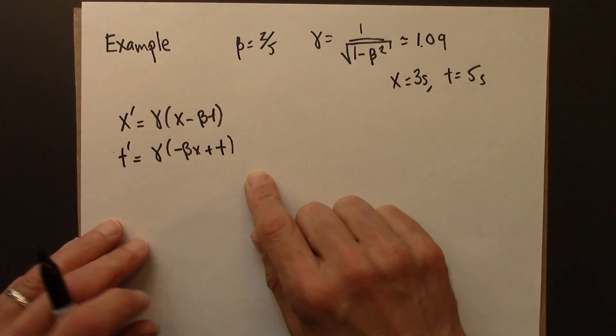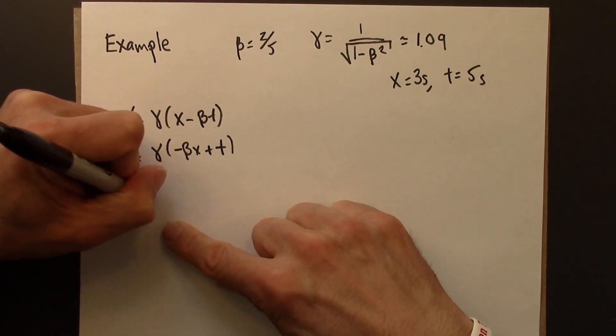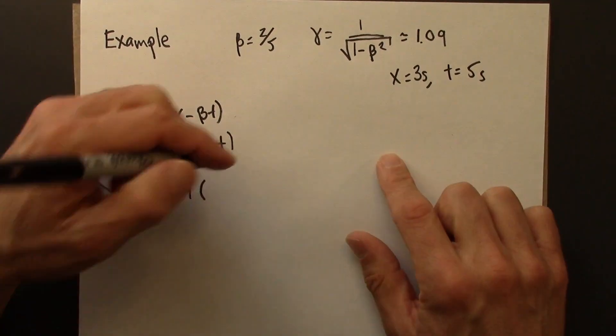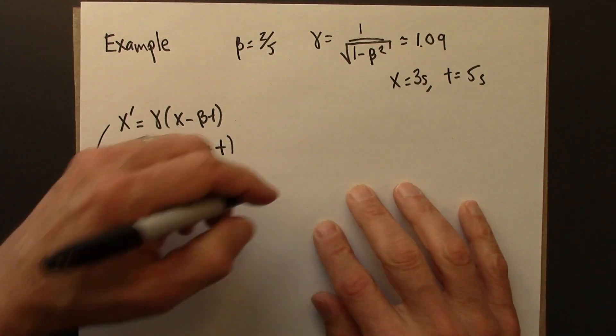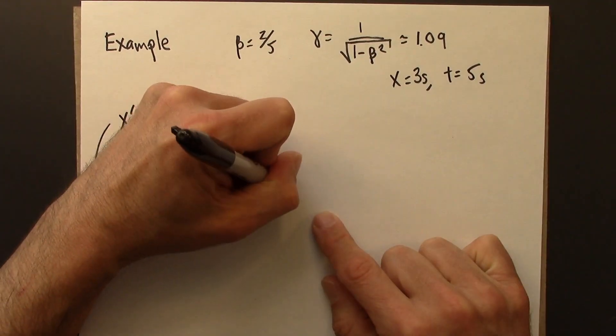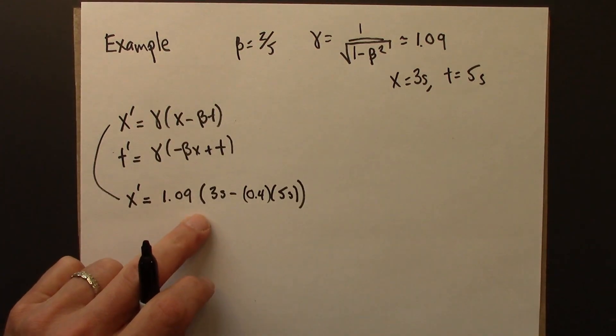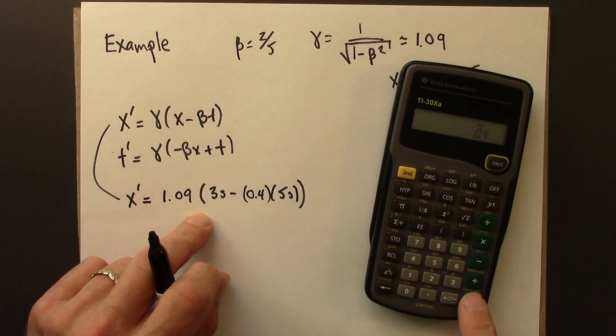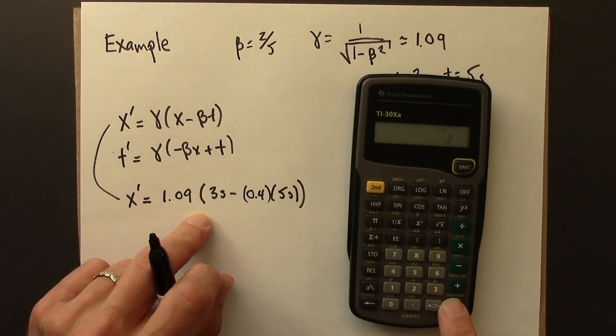And now let's plug in and see what we get. I guess I'll do x prime first. x prime is gamma, that's 1.09, x is 3, beta is two-fifths, or I'll write that as 0.4, t is 5. And then this is something we can do on a calculator. So let's evaluate this. 5 times 0.4, I could have done that without a calculator. Make that negative, add 3 to it.